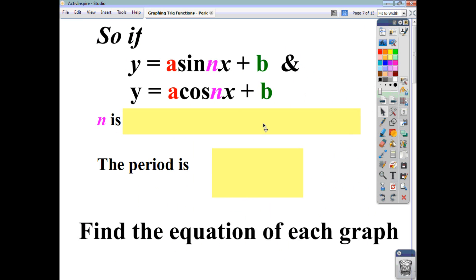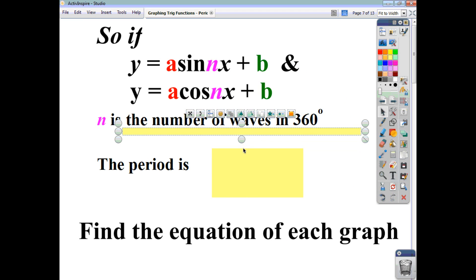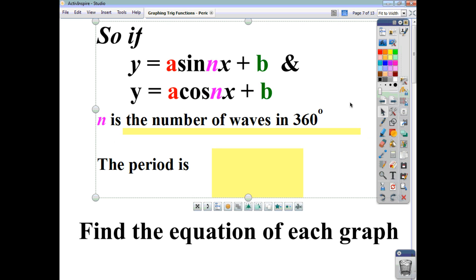So, to summarize, when you think of functions in the form of a sine nx plus b, or a cos nx plus b, n is the number of waves, or the number of cycles, in 360.